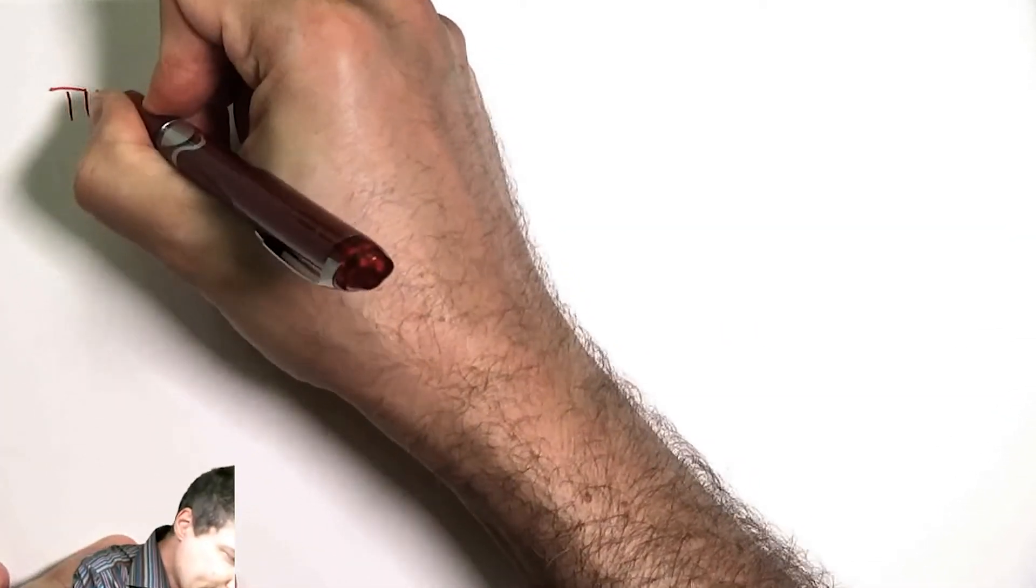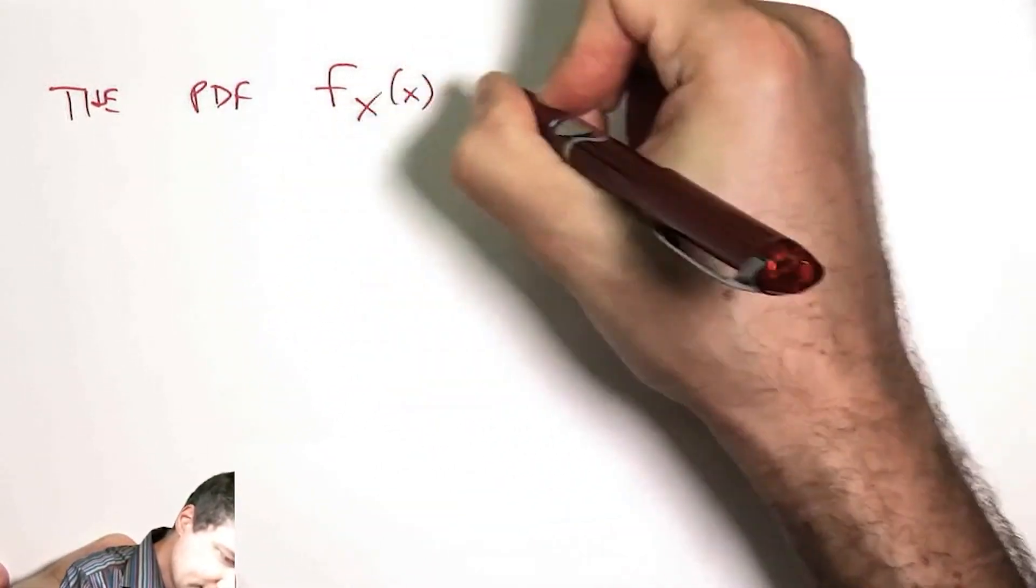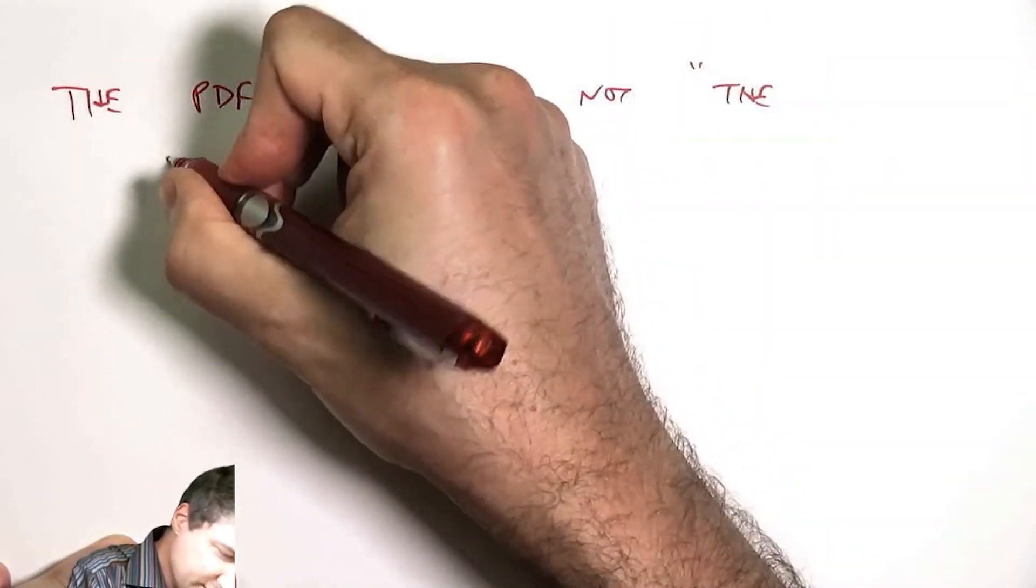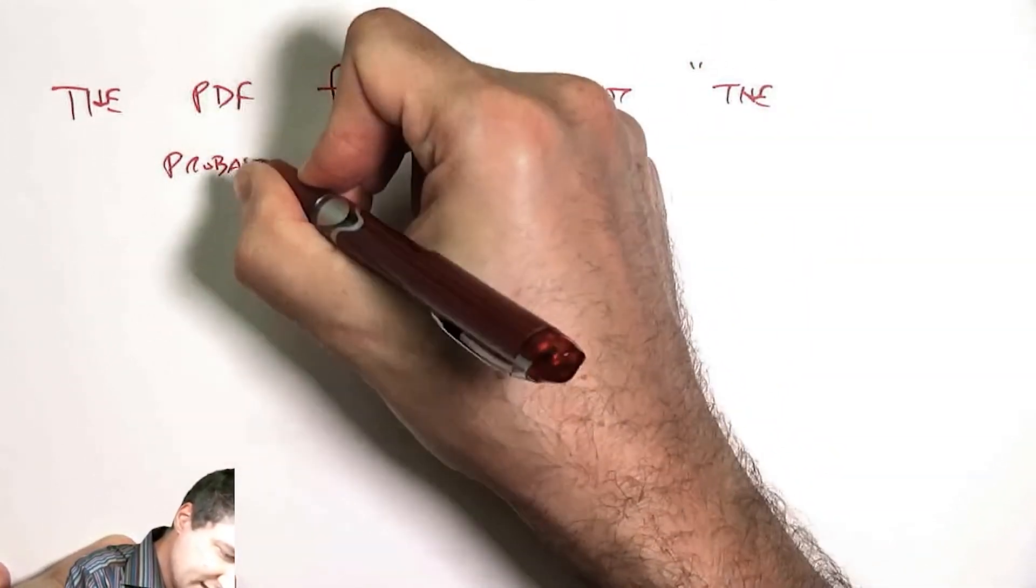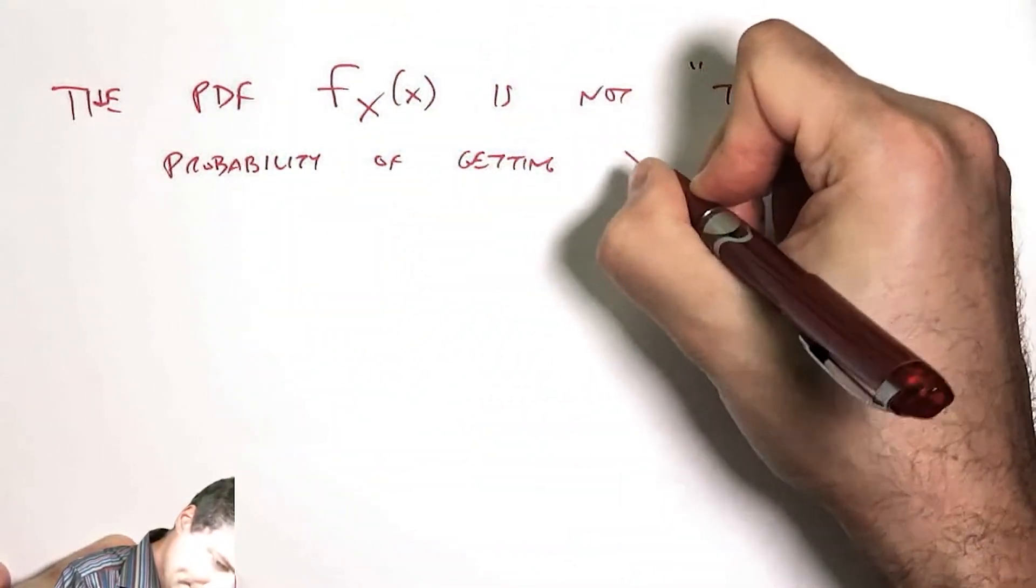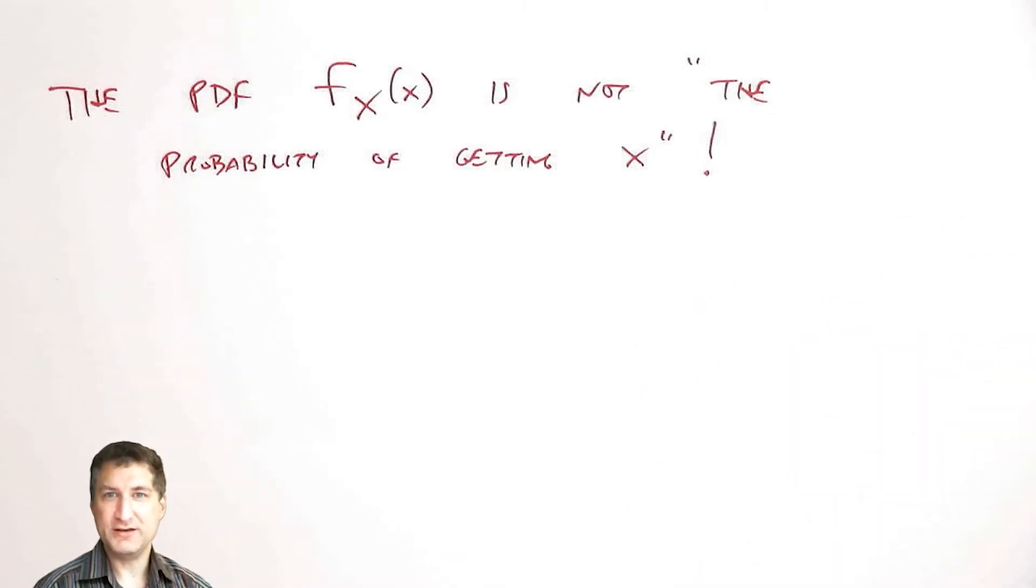Now it's important to realize that the PDF is not the probability of getting x. Let me write that down to be concrete. The PDF is not the probability of getting x. We already know that the probability of any particular value is zero. Instead, it's basically talking about how likely are things in the neighborhood of x.